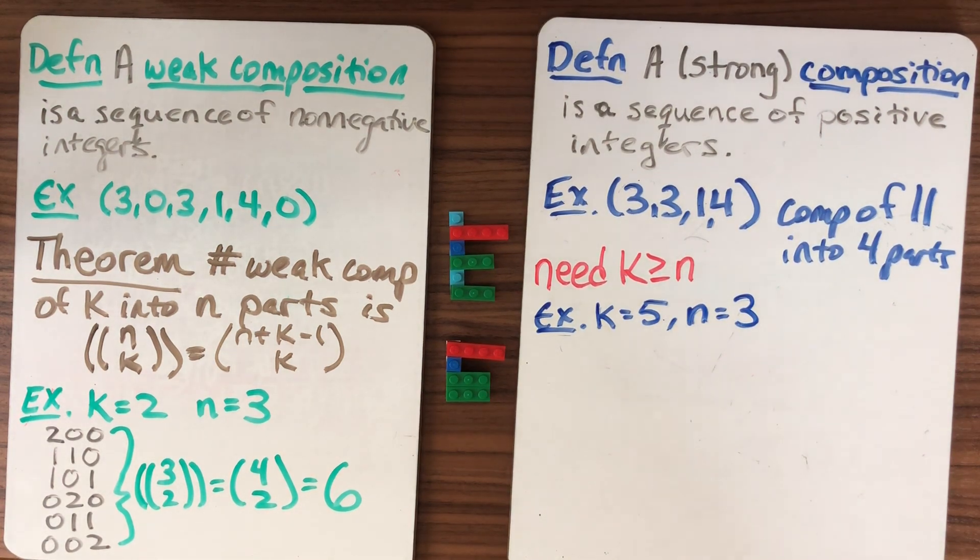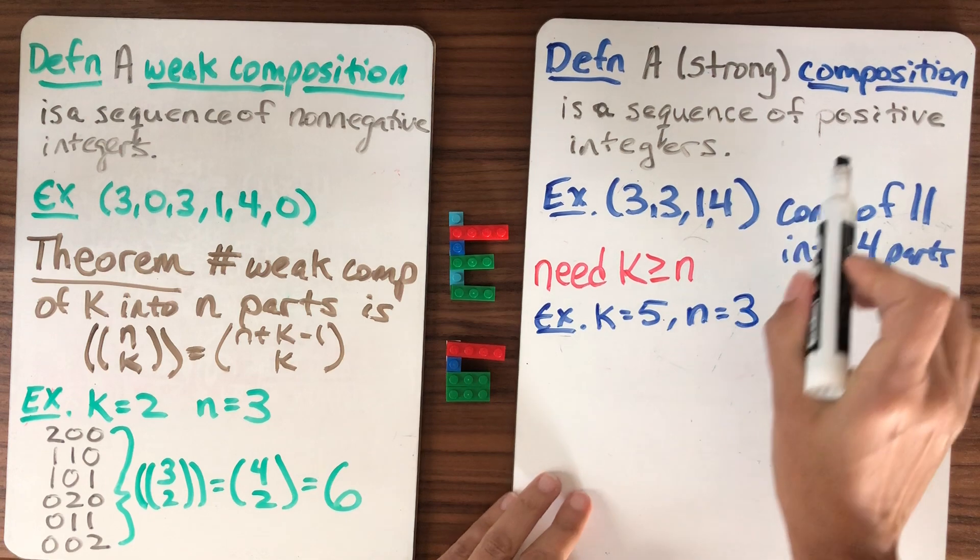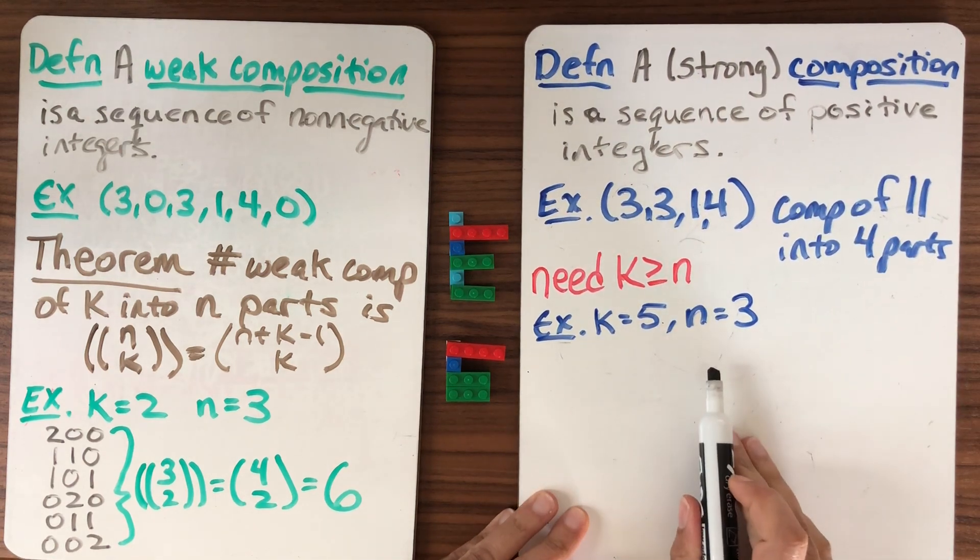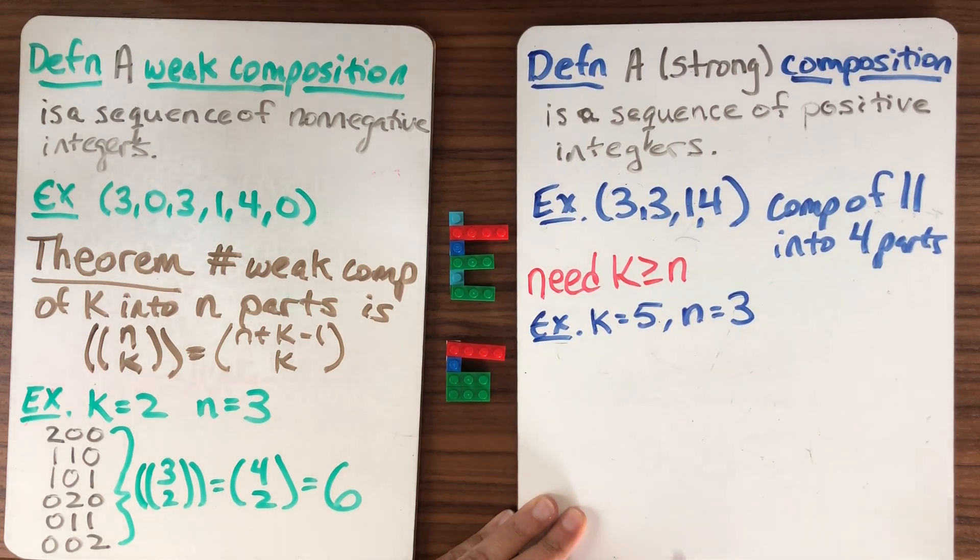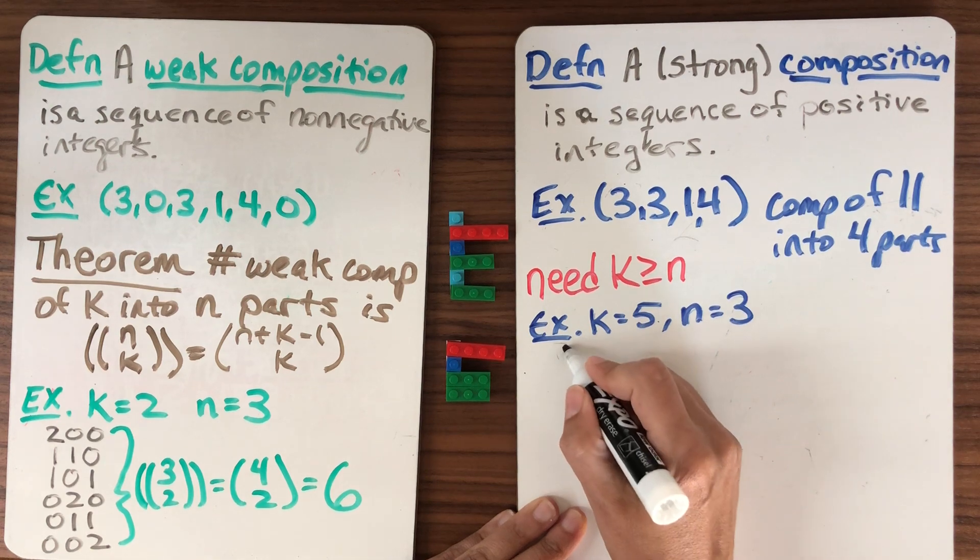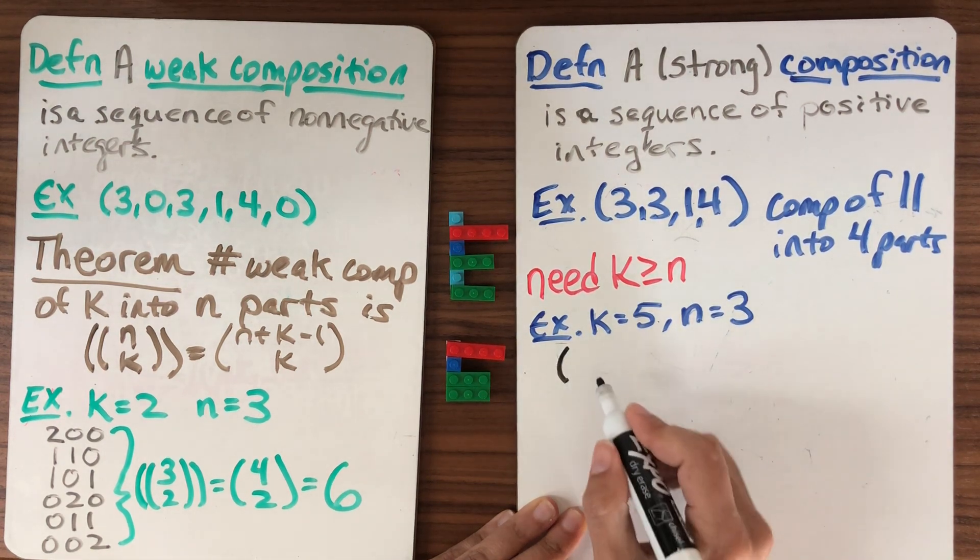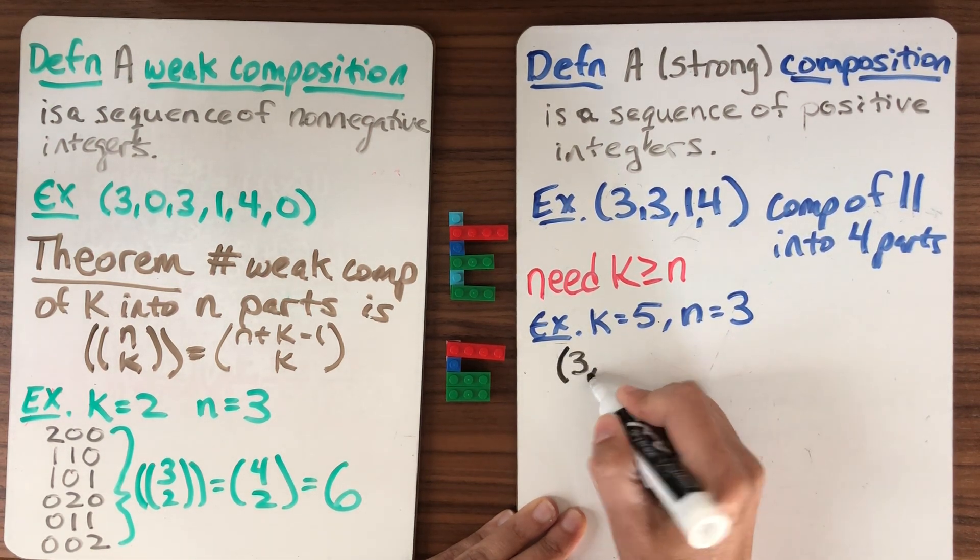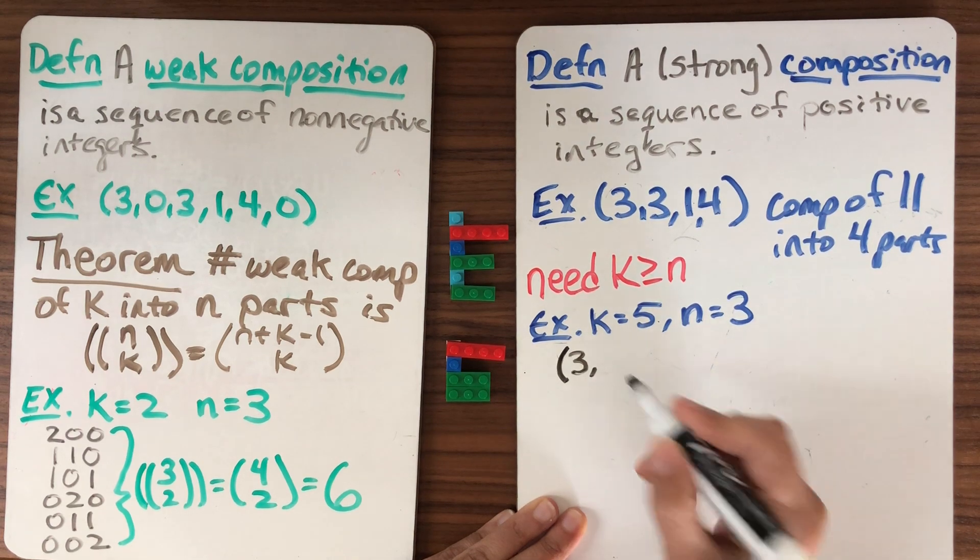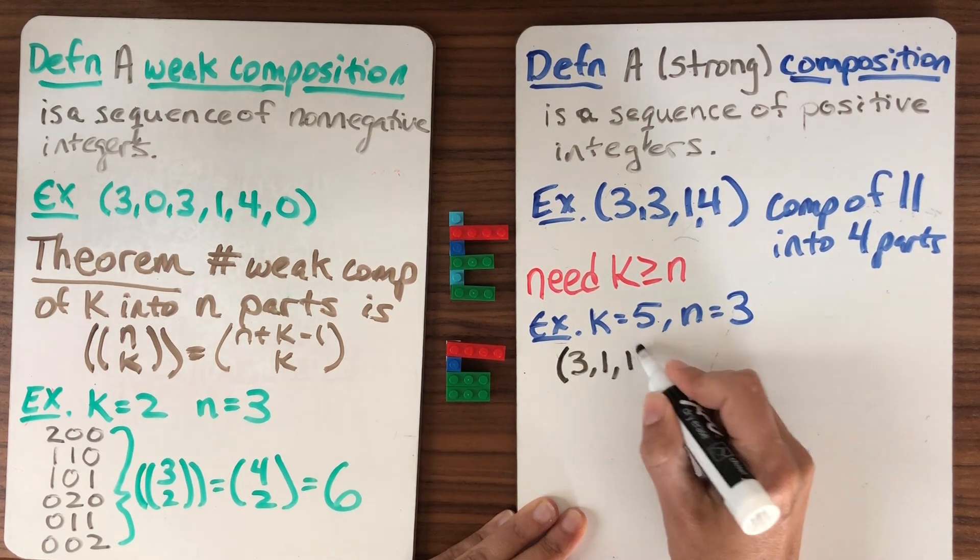Let's make our k nice and big like five, and maybe we'll keep the same n that we had before in the example that we did down here which is three. So let's look at all the ways that we can write a sequence of positive numbers that add up to five, and I only get three numbers. So I can think about what's the biggest number I could put. Well it's three, because I'm not allowed to put a zero, so the smallest is one, so the biggest is three.